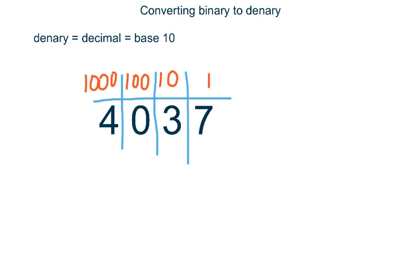To work out what our number actually means, we need to add these different values together. So we've got 4 thousands, so 4,000, plus no hundreds, so we don't need to add anything, plus 3 tens, 30, plus 7 ones, 7. If we add all those together, 4,000 plus 30 plus 7, we get 4,037, our original number.